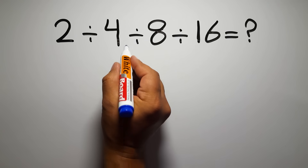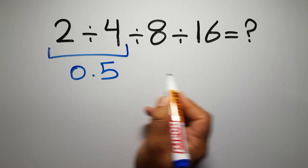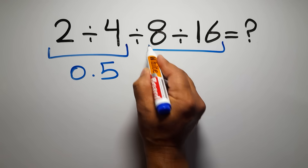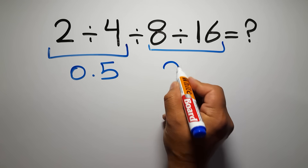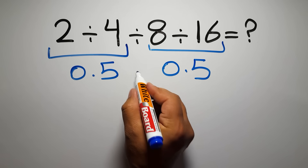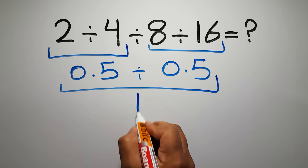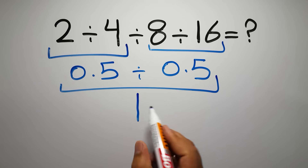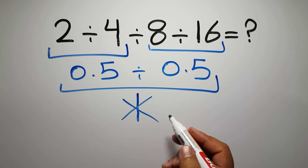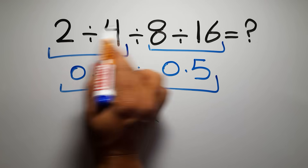2 divided by 4 is just 0.5, and 8 divided by 16 gives us again 0.5, so 0.5 divided by 0.5 which equals 1. But this answer is not correct, because according to the order of operations, when we have more than one division in an expression, we have to work from left to right.